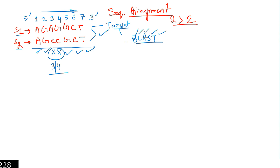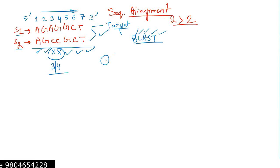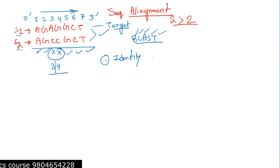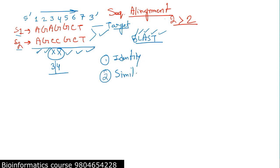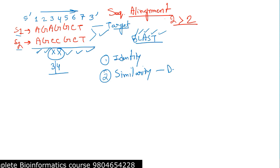When we do sequence alignment there are different ways it can be done, and there are some important terminologies to understand. One such term is identity. Identity refers to characters which are shared between two taxa — for a particular character, whether it's a phenotypic or genotypic character. Then we have similarity. Similarity is the degree of identity — it is the degree to which sequences share identical characters.